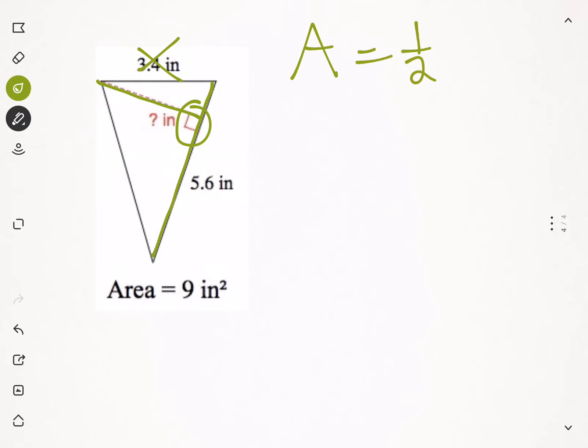Write your formula, A equals half bh. Substitute in what we know. We know the area is 9. Half times the base is 5.6. And this time, it's the height that we don't know. But the steps remain the same.